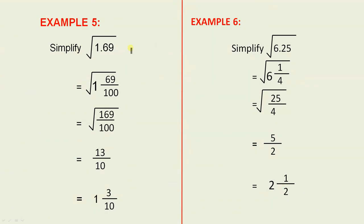Example 5: The square root of 1.69. Now that's the same as 1 and 69 over 100, which is 169 over 100. The square root of 169 is 13. The square root of 100 is 10. 13 over 10 is 1 and 3 tenths.